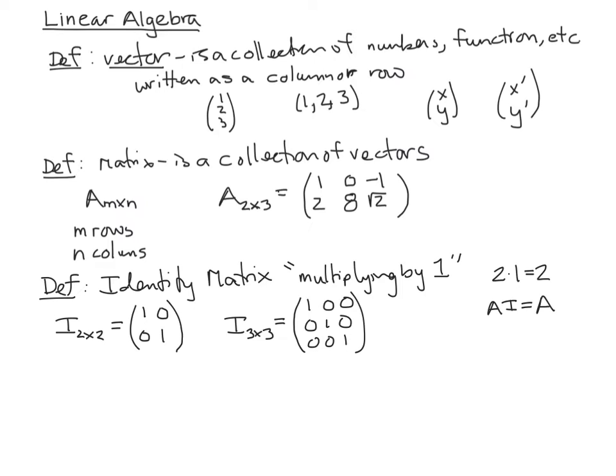If we wanted something bigger this would continue — for a 4×4 we would just have 1s all the way down the diagonal and 0s everywhere else.